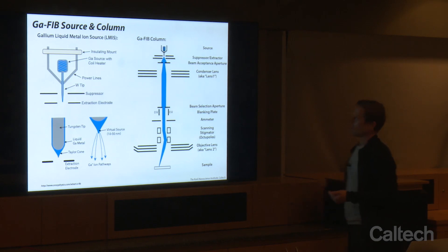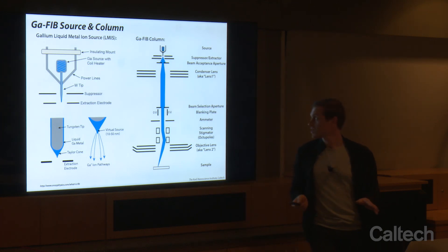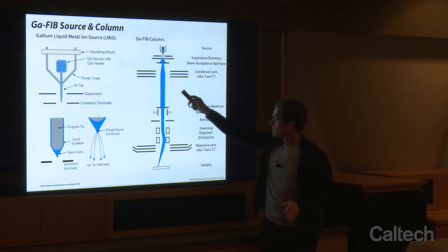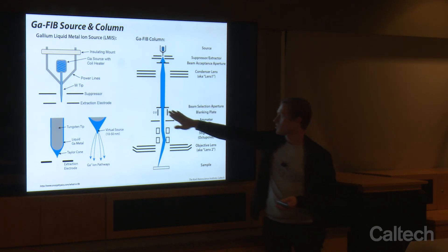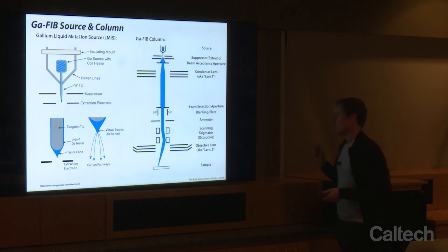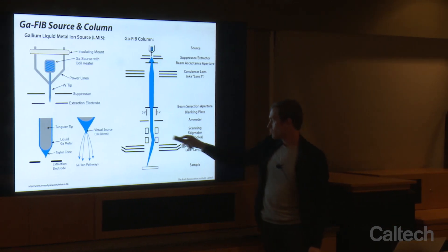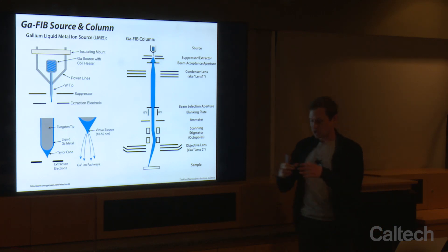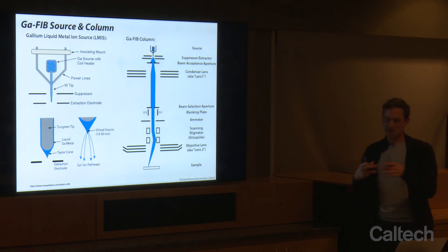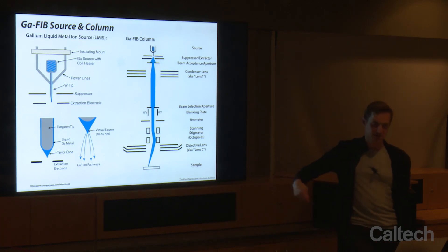Here's our column. We have the source at the top with the suppressor and extractor. A beam acceptance aperture blocks most of that two microamps of current. The beam enters the condenser lens, and we can change how the beam is spread over the aperture. When we change current, we're mostly changing the beam selection aperture — just the size of the hole the beam passes through. The beam then comes down through the scanning and stigmator octupoles, which are responsible for both scanning the beam over the surface and changing the profile of the beam. If we have astigmatism, we get an elliptically shaped beam; we want a round beam for a nice small probe size. Then it passes through the objective lens where it gets focused down to a final point and scanned across the sample.